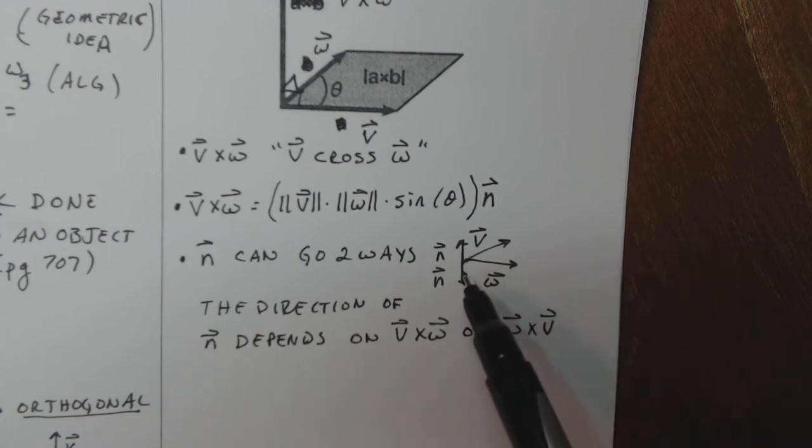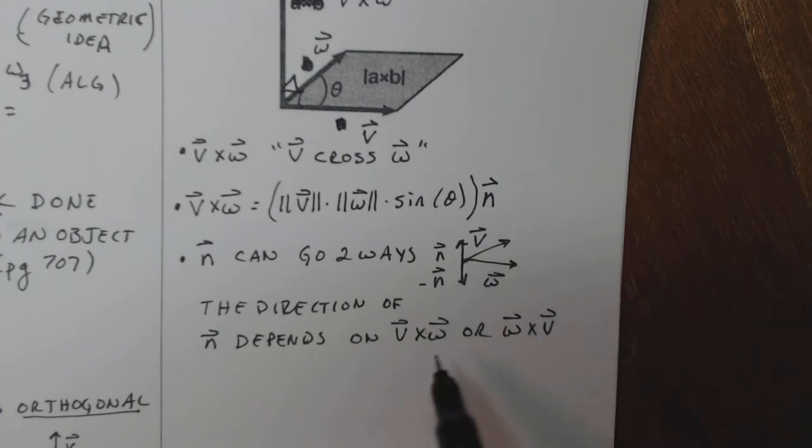Now, you notice that this is basically, if this is N, this is technically negative N. So I would say that the cross product is not commutative as a result of this. It's not commutative, because if I'm getting two different vectors pointing in two different directions, then these cross products can't be equal.